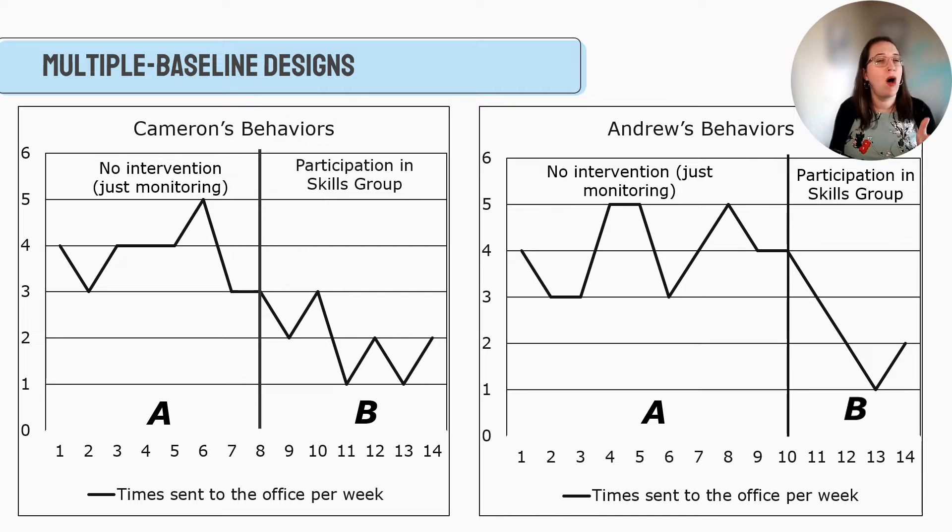So Cameron is the first eight weeks and then we put him in the skills group. We start Andrew at the same time, but we're going to monitor him for 10 weeks. Then we're going to put him in the skills group. So it kind of allows us to say, hmm, maybe it's not that eight weeks, everybody suddenly starts feeling better. Maybe it was the actual intervention because Andrew doesn't start showing an improvement until he goes in the skills group at 10 weeks. And so doing multiple baseline designs, administering interventions at different points in someone's treatment or in the process, can provide really good information.